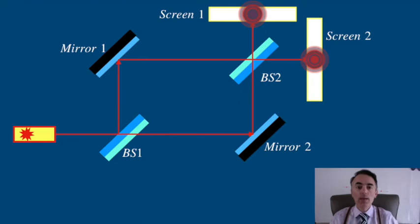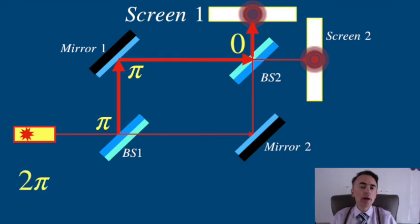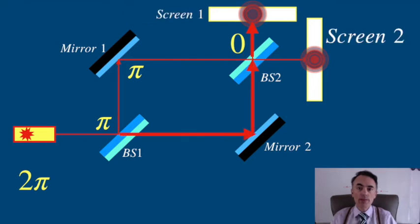With this at hand, if we follow the trajectory of the upper path going to screen one, we see that light is reflected by the first beam splitter, then by a mirror, and finally by the second beam splitter. There is a total of two pi phase shift. Light that follows the bottom path is reflected by one mirror, so there is only one pi phase shift.